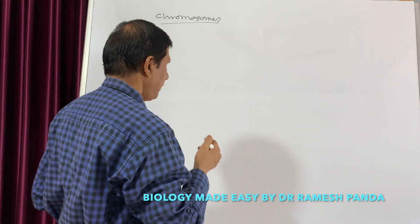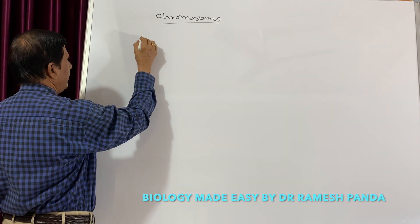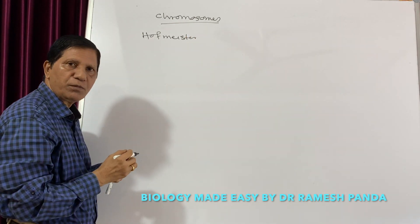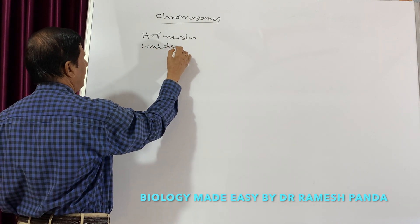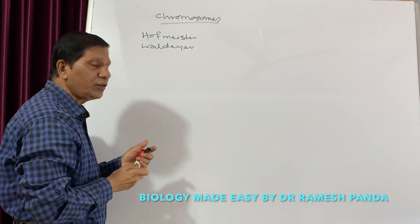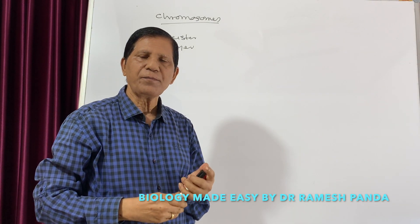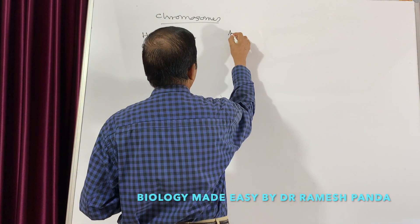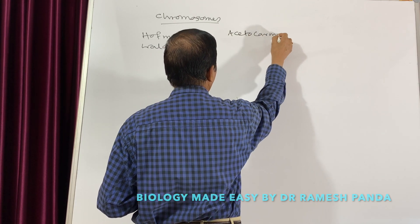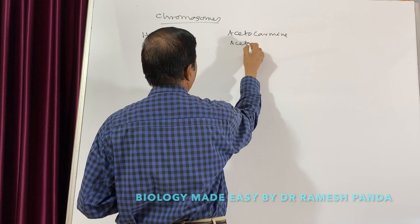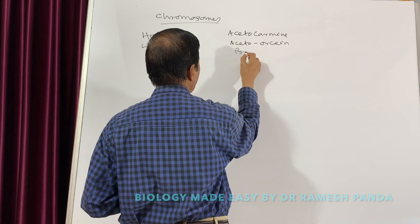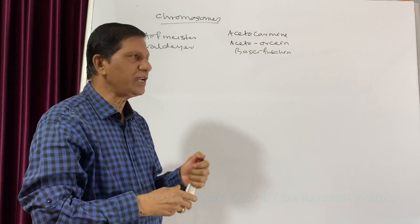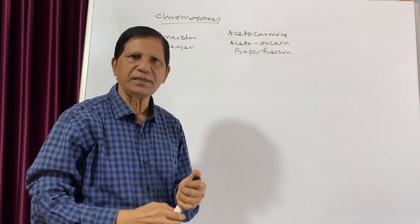Chromosomes were first discovered by Hoffmeister, but the term chromosome was given by Waldeyer. Why did Waldeyer give this term? Because when he stained the nucleus with some basic stains like Aceto-Carmine, Aceto-Orcein, or any basic Fuchsin, when the nucleus was stained with any one of these, he found that there are some colored bodies.